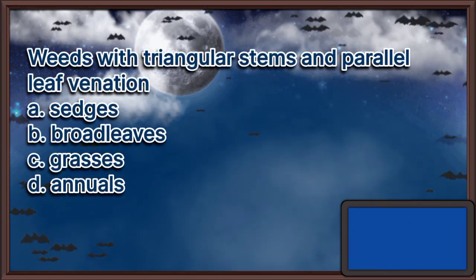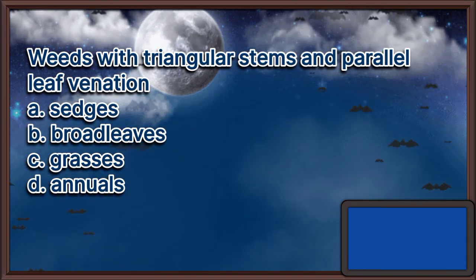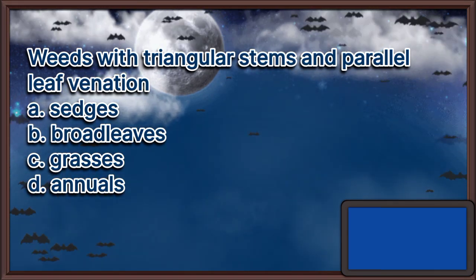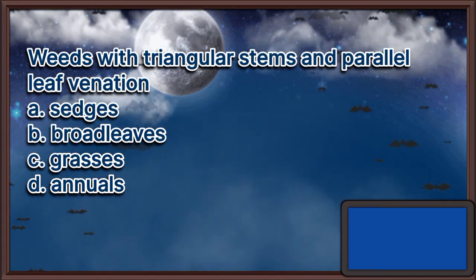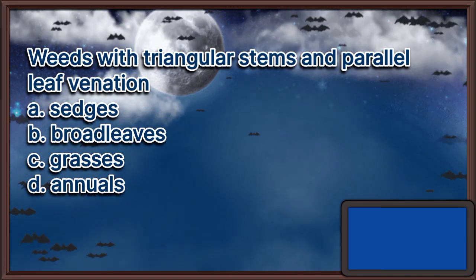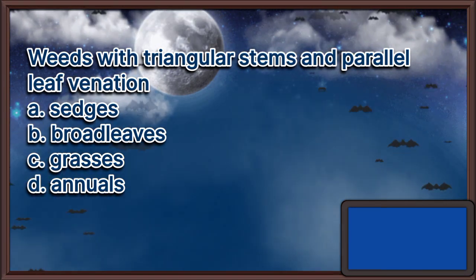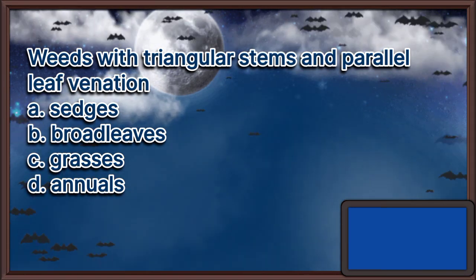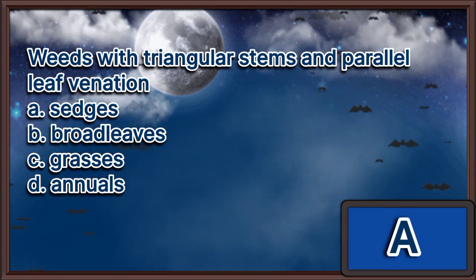Weeds with triangular stems and parallel leaf venation: A. Sedges, B. Broadleaves, C. Grasses, D. Annuals. The answer is letter A.